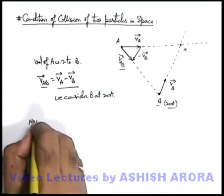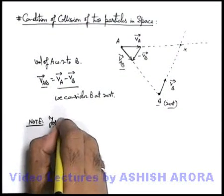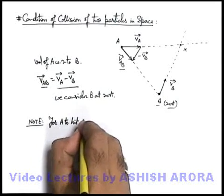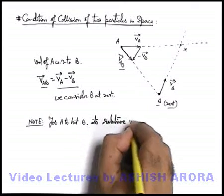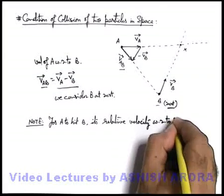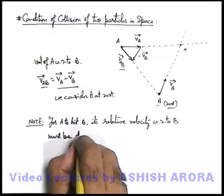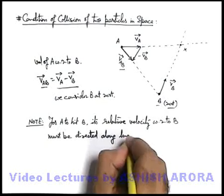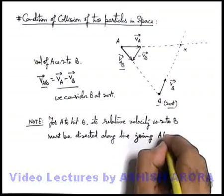So you just write down a note, or it can also be taken as condition of collision, for A to hit B its relative velocity with respect to B must be directed along the line joining A to B.